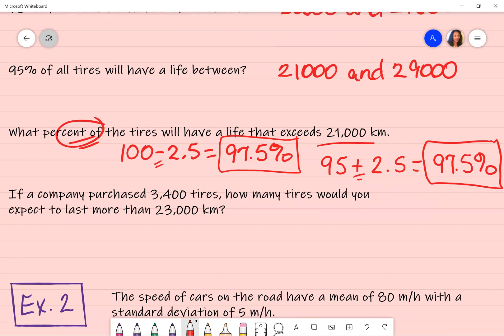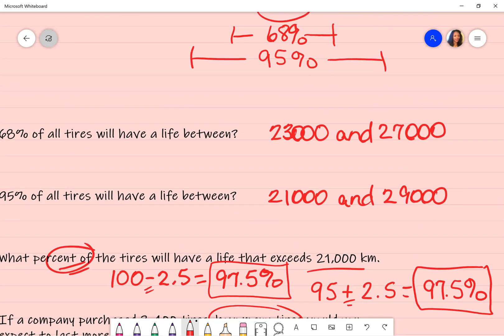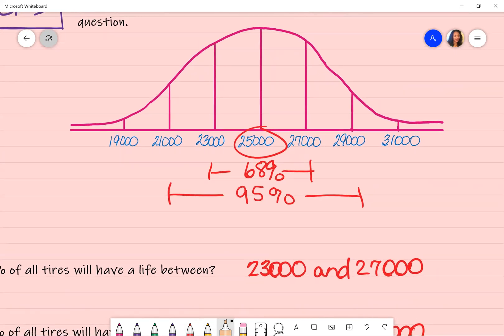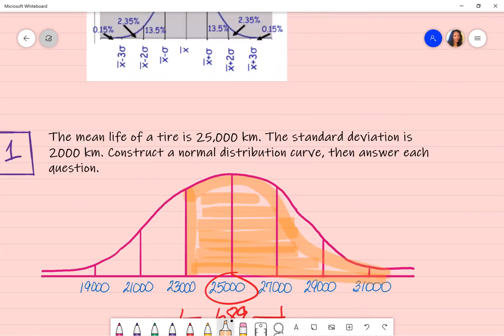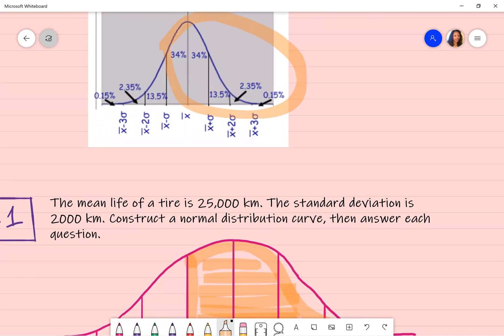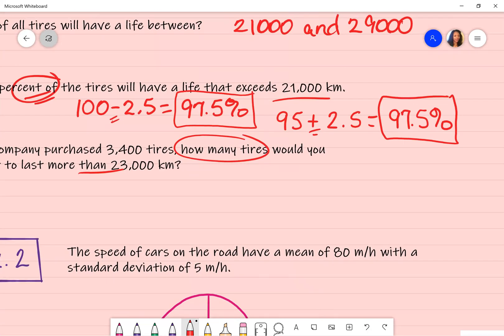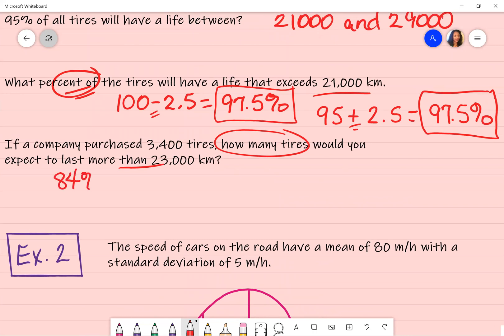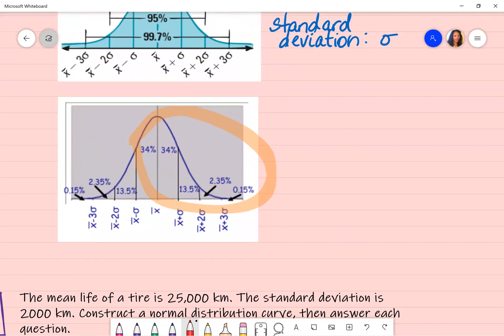So the next question says, if a company purchases 3,400 tires, how many tires, we're not looking for a percent this time. How many tires would you expect to last more than 23,000 kilometers? So let's go back to our bell curve and 23,000 more than is to the right. So everything to the right. Again, if we are looking at this visual representation, you can clearly see we're going to need all that information, or you can do the other way. Like I said, you can take 100% of what you don't want.